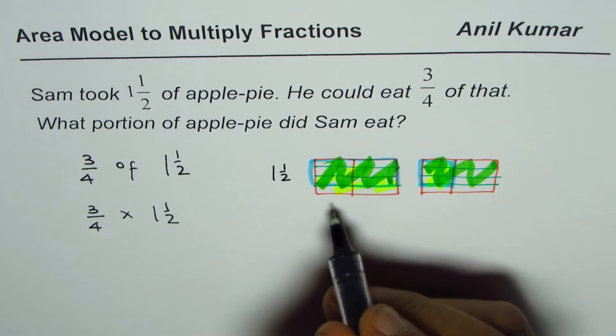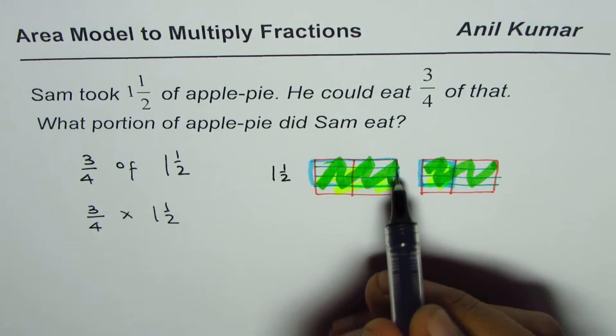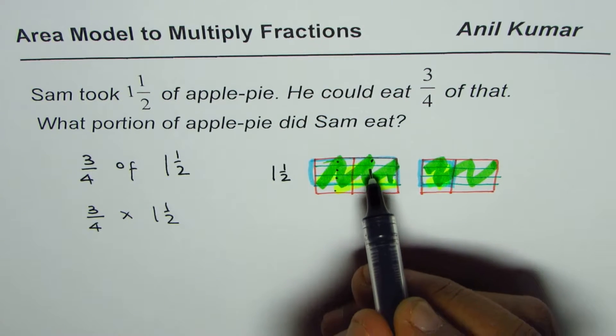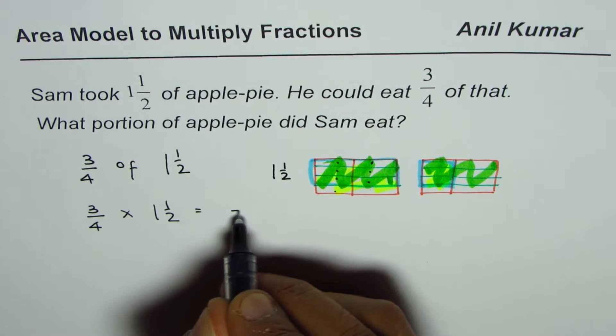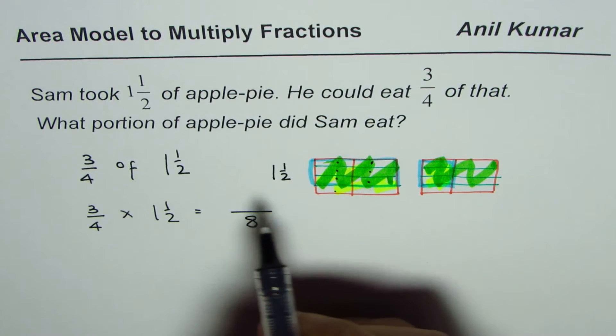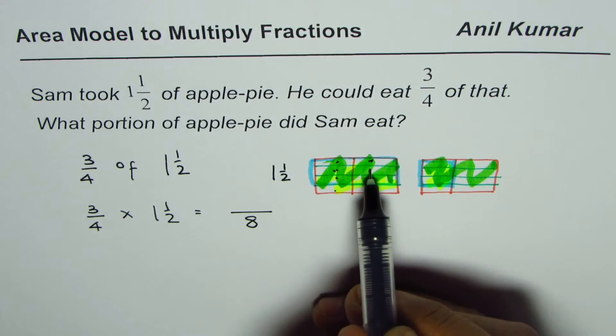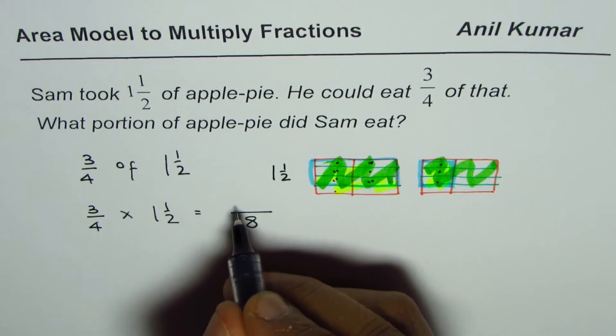Let us count how many have been selected out of how many. In each rectangle you find one, two, three, four, five, six, seven, eight parts. So there are eight parts in all. And out of these eight parts, how many did we select? One, two, three, four, five, six, seven, eight, nine. So we selected nine of them.